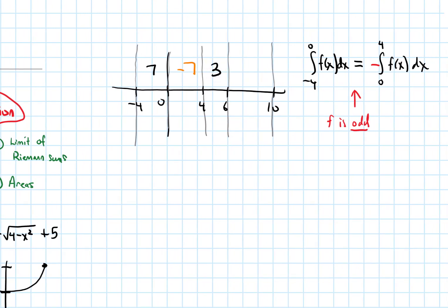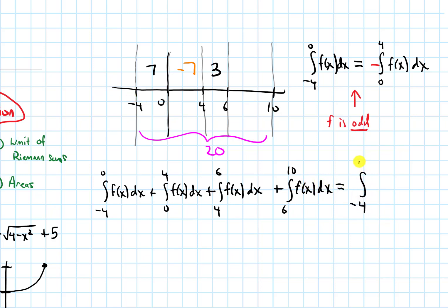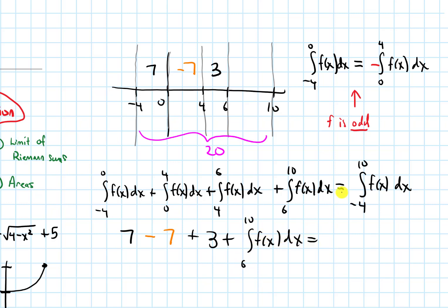The whole integral from negative 4 to 10 was given to be 20. Now I'll use the additive integral property: the integral from negative 4 to 0, plus the integral from 0 to 4, plus the integral from 4 to 6, plus the integral from 6 to 10, equals the integral from negative 4 all the way to 10 of our function. Plugging in the known values: 7 plus negative 7 plus 3 plus the integral from 6 to 10 equals 20.